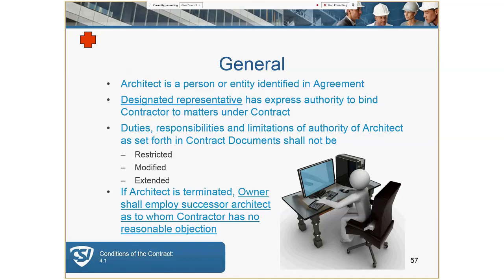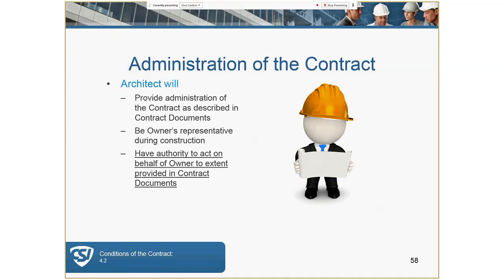The architect will be identified in the agreement with a designated representative with express authority to bind. If the architect is terminated, the owner shall employ a successor architect to whom the contractor has no reasonable objection. The architect's duties include providing administration of the contract as described in the contract documents. The architect will be the owner's representative during construction and will have authority to act on behalf of the owner to the extent provided in the contract documents.